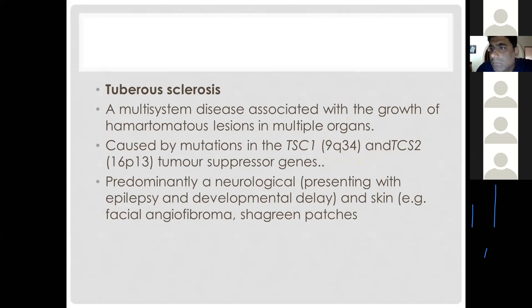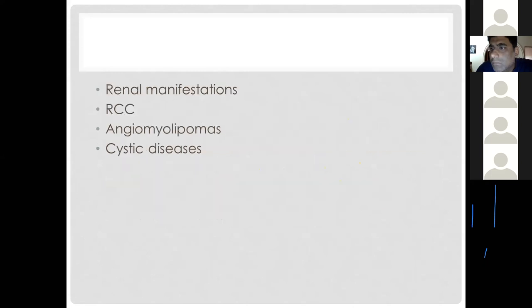Tuberous sclerosis complex is a familial, multi-system disease characterized by hamartomatous lesions in multiple organs. It is caused by mutations in the TSC1 and TSC2 genes, and most commonly presents with neurological symptoms including epilepsy or developmental delay, as well as facial angiofibromas known as shagreen patches. Renal manifestations include renal carcinoma, angiomyolipomas, and cystic disease.